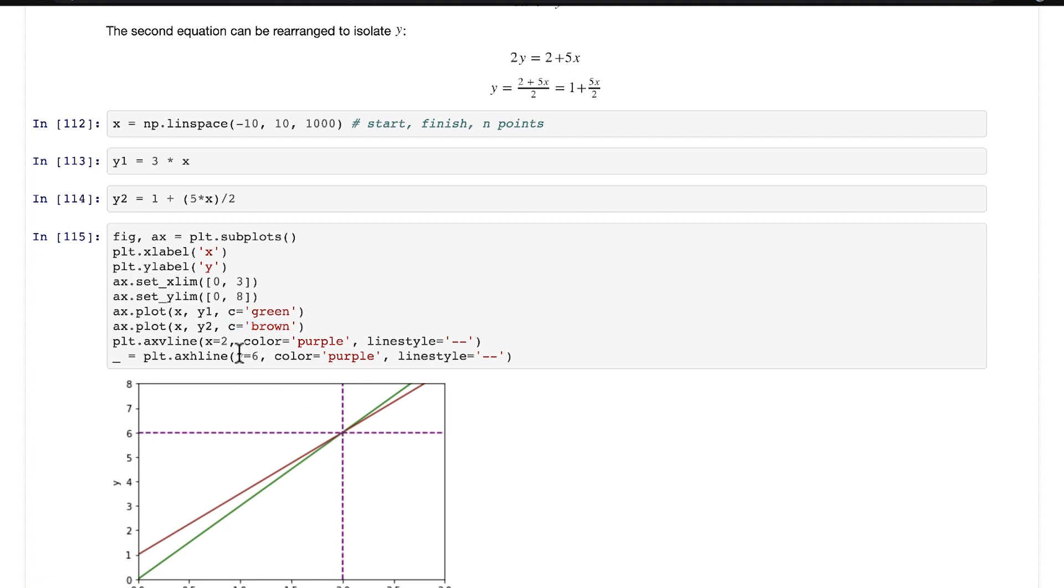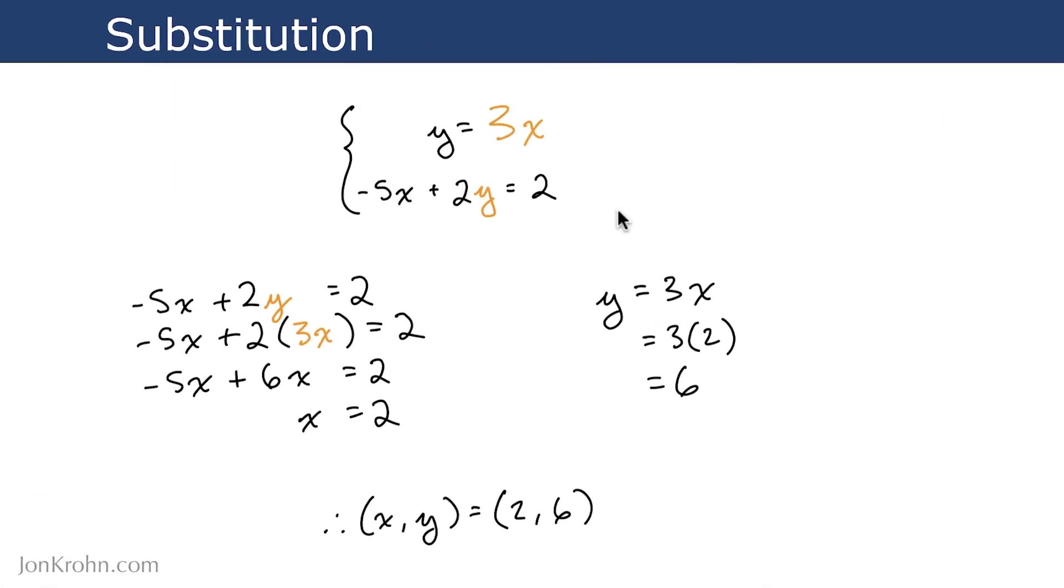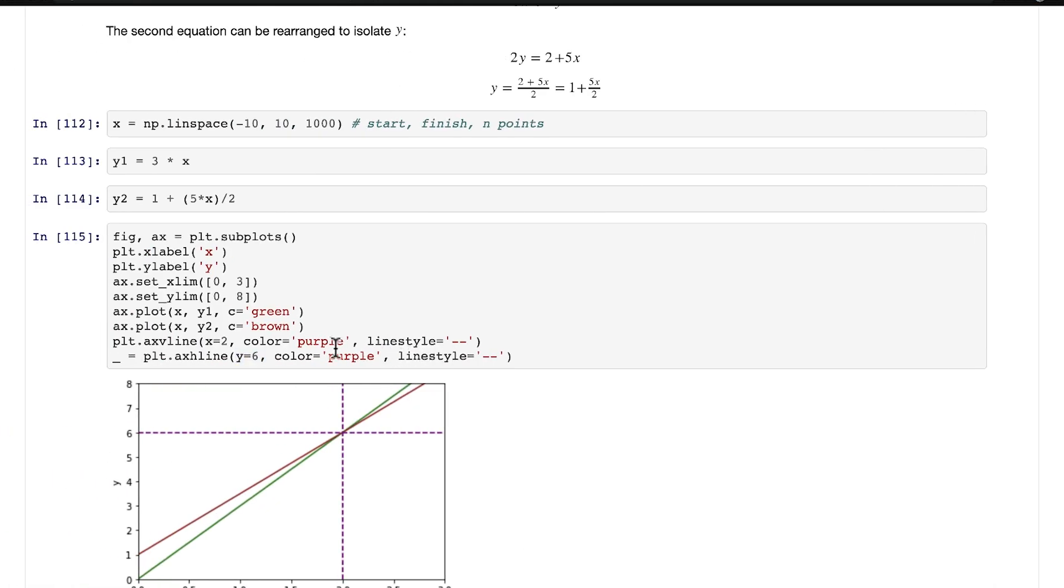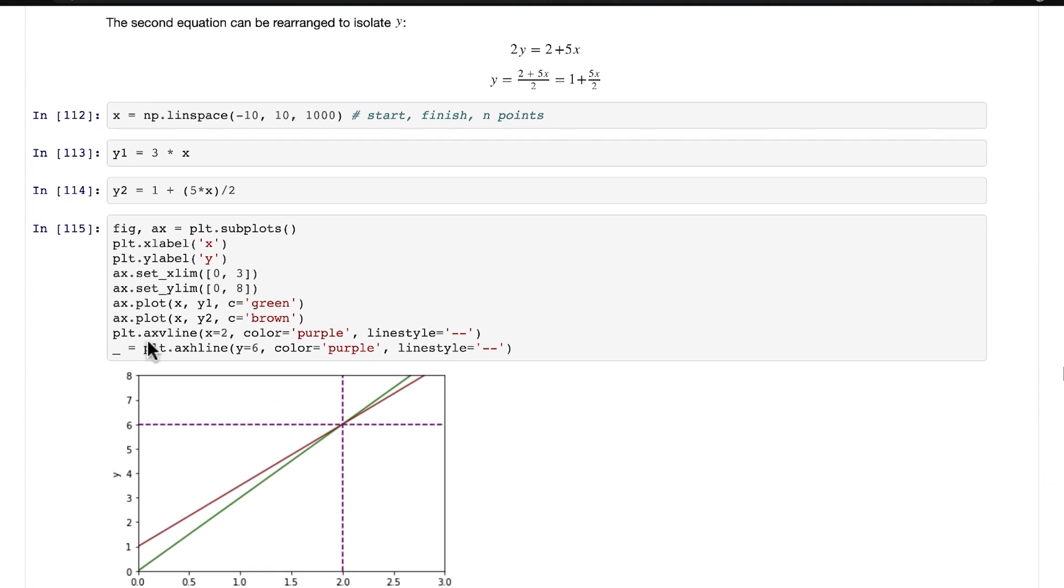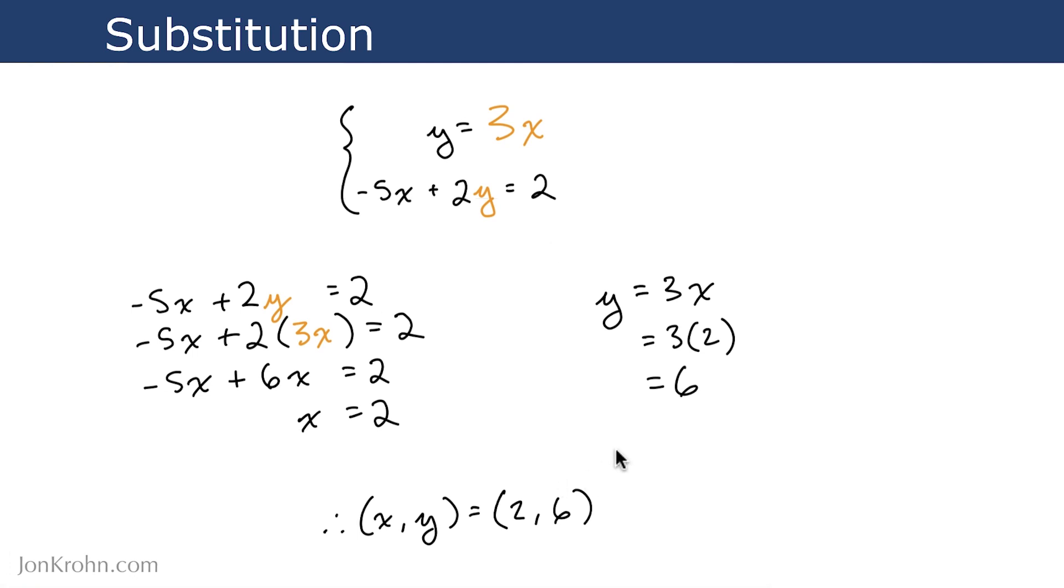And we know that that point where the two lines intersect is at x = 2 and y = 6. We know that from having solved it already. Using the same hatched purple lines to indicate where that point is, where x = 2 and y = 6.